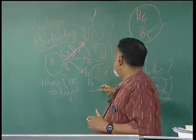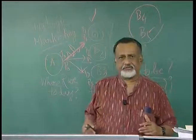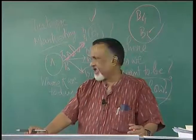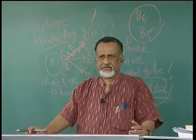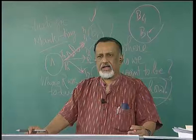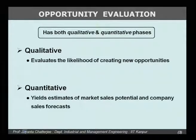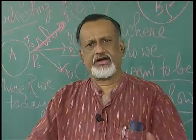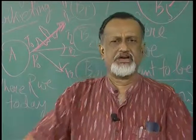In choosing B1, B2, B3 over B4 and B5, we use two types of analysis: qualitative as well as quantitative. Qualitative aspects usually relate to the creation of completely new opportunities, while quantitative means identifying numbers — like what could be the additional sales revenue potential in rupee terms, or in volume terms the number of additional units that can be sold.